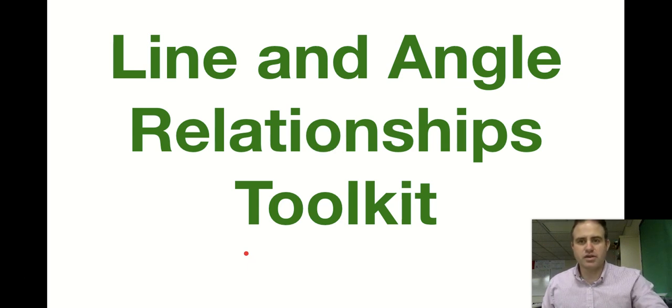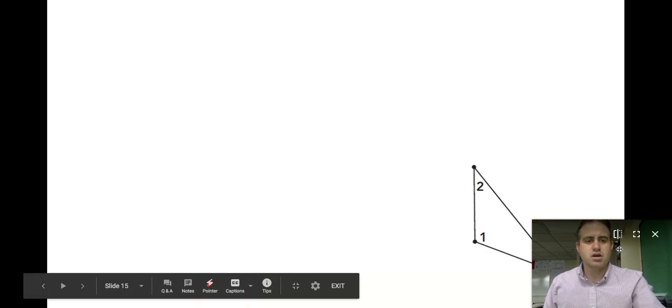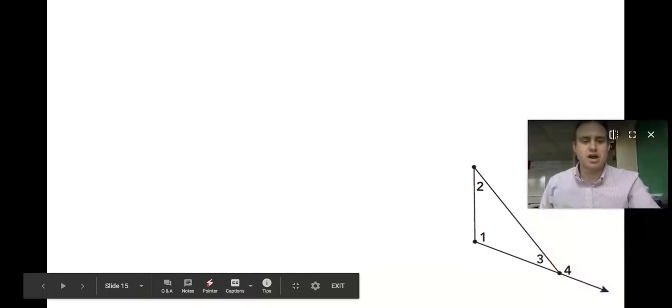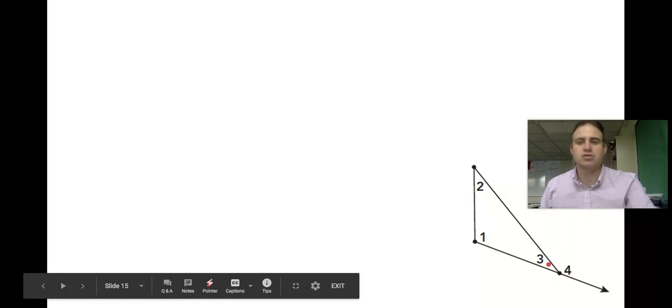Here's our second video for line and angle relationships. We're going to study the exterior angle theorem. I've got a triangle here, and my exterior angle is angle number four. We're going to study how this angle interacts with our triangle.